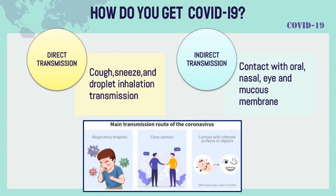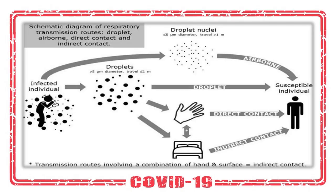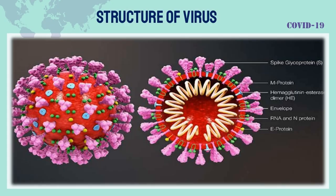Transmissibility: How do you get COVID-19? Transmission occurs through cough, sneeze, and droplet inhalation — direct transmission — and also through contact with oral, nasal, eye, and mucous membranes — indirect transmission.